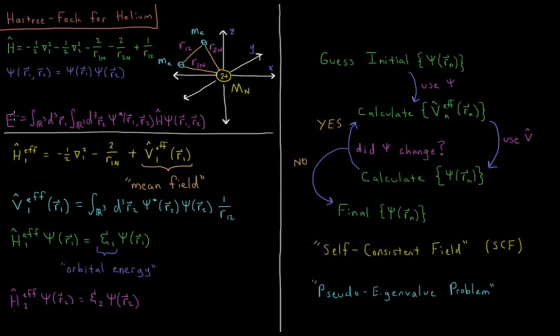The energy of this system is an integral from minus infinity to infinity over x1, y1, z1, and an integral over x2, y2, z2 — all coordinates of all electrons — of psi-star of r1 and r2 times the Hamiltonian acting on psi of r1 and r2. It is the standard expectation value integral for our Hamiltonian operator, but now we have six-dimensional coordinates, all Cartesian possibilities from negative infinity to infinity in all six dimensions.